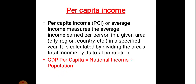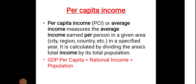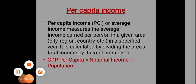Per capita income is used to define the poverty line — if a citizen's income is lower than the average income, they may fall below the poverty line. Per capita income is used heavily in the first chapter as well. That's it for this lecture. Thank you so much, have a great day, and please do subscribe to my channel.